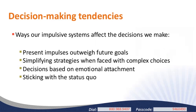Here's a brief overview of some common ways our impulsive systems can get in the way of our best intentions or prevent informed choices. One: our present impulses often conflict with longer-term goals. Two: when faced with complex information or complicated choices, we often use simplifying strategies to make decisions. Three: our decisions are often guided as much, if not more, by emotional attachment as by logical analysis. Four: we have a strong tendency to stick with the status quo rather than make an active choice.